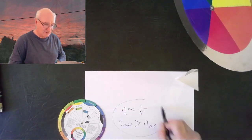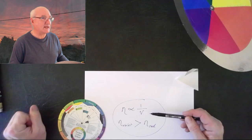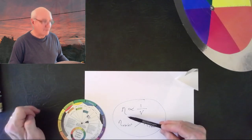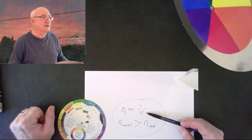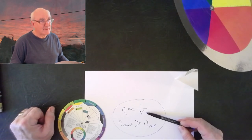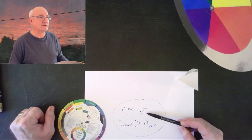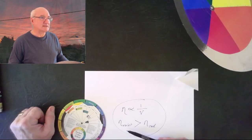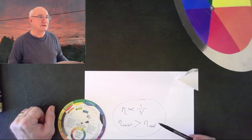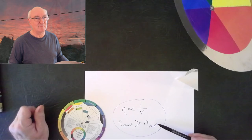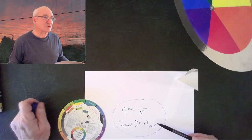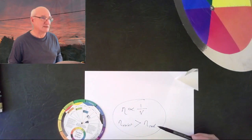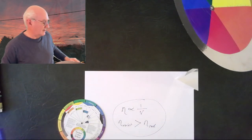I hope that demonstrates the principle in this simple fashion with a couple of laser pointers. To summarise: the refractive index η is proportional to one over the speed of the light going through the medium, and that speed depends on the colour - the wavelength. The refractive index for the violet end of the visible spectrum is greater than for the red end, so the further from red, the more it's bent.